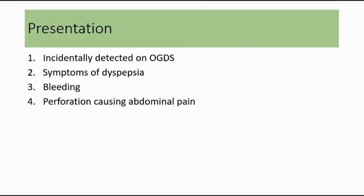For clinical presentation of peptic ulcer disease, sometimes it is accidentally detected on OGDS, or the patient presents with symptoms of dyspepsia. There are a few types: ulcer-like dyspepsia, where there is pain in the upper abdomen; dysmotility-like dyspepsia, where there is non-painful discomfort in the upper abdomen associated with abdominal fullness or nausea. Another presentation is bleeding, where the patient presents with hematemesis — vomiting with blood — coffee ground vomitus, or melena, which is very black stool indicating blood in the stool.